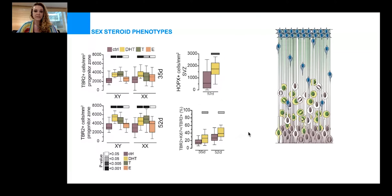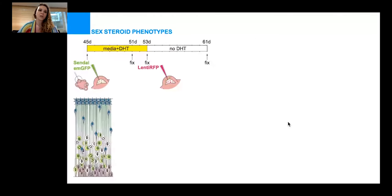Just to summarize, application of androgens—DHT and testosterone—causes an increase in the basal progenitors in the developing neuroepithelium, and these progenitors cycle more. We were of course interested, what is the mechanism of this increase? So in order to study this, we did a clonal analysis.